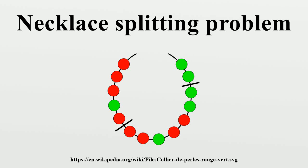Necklace splitting is a picturesque name given to several related problems in combinatorics and measure theory. Its name and solutions are due to mathematicians Noga Alon and Douglas B. West. The basic setting involves a necklace with beads of different colors. The necklace should be divided between several partners such that each partner receives the same amount of every color. Moreover, the number of cuts should be as small as possible. The following variants of the problem have been solved in the original paper.